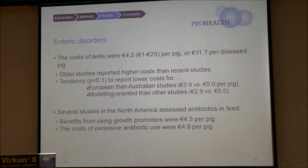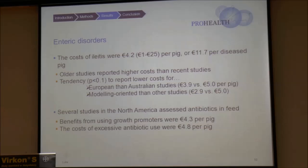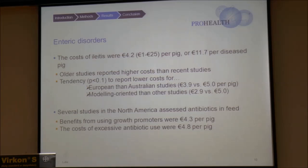The cost of ileitis was about 4 euros per pig, also with a huge range of variation. Older studies reported higher costs than more recent studies, and there was a tendency — not statistically significant — to report lower costs for European than Australian studies. In North America, growth promoters and antibiotics in feeds have been studied extensively. The benefits associated with use of growth promoters in feed were about 4 euros per pig, showing that health issues related to feeding and digestion can be quite important. One study estimated that excessive use of antibiotics was costing about 5 euros per pig, showing it can also be economically harmful.